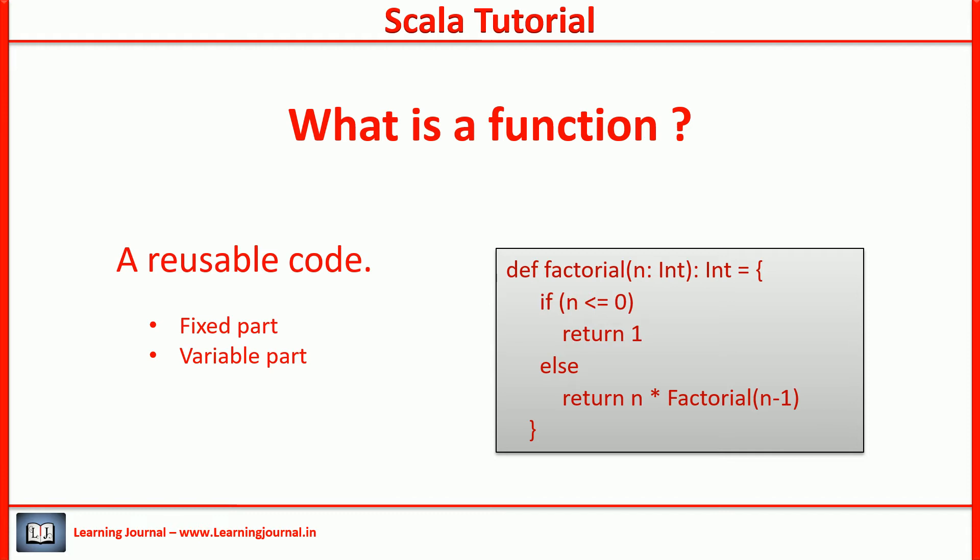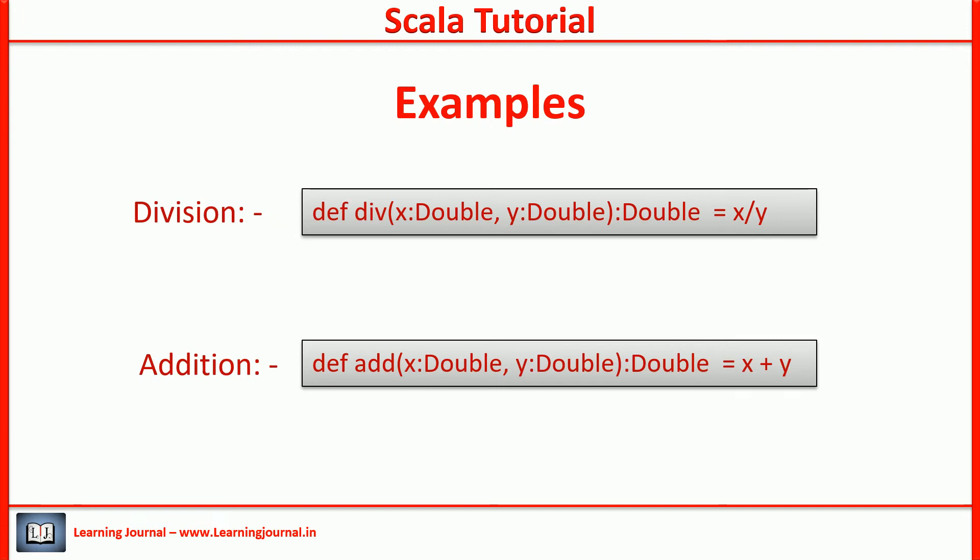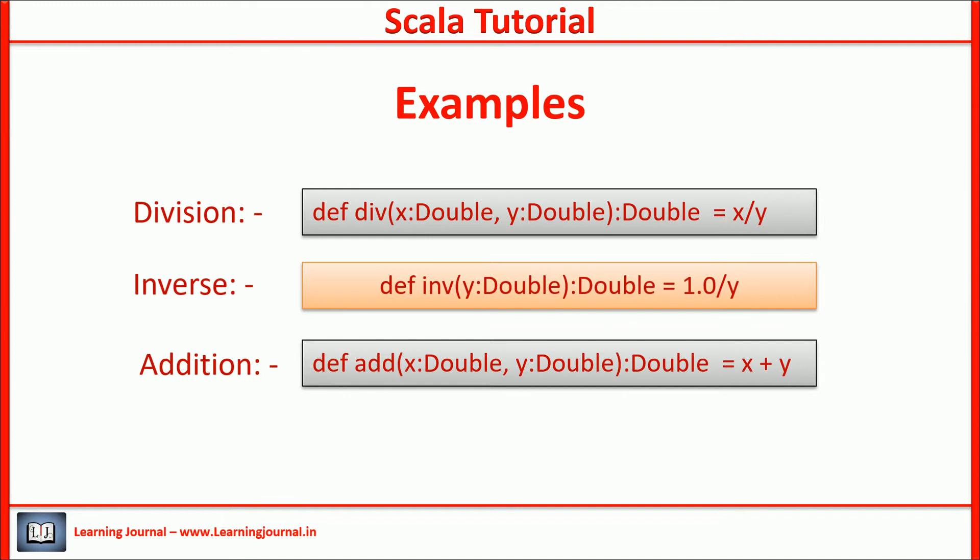Let's look at a couple of simple examples. These two functions are generic solutions for a pair of numbers. The first one is a division and the second one is an addition. These are small and simple functions, but they also have a fixed part and a variable part. Have you ever thought that fixing some of the variable parts can give you an entirely different solution? Let me show you. Here is an inverse function. The division is a general solution and inverse is a particular case of a division operation.